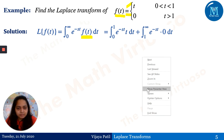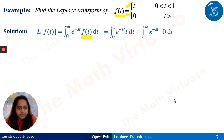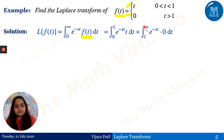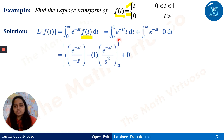The integration is from 0 to 1 of e^(−st) · t dt, because the value of the function from 0 to 1 is t, and from 1 to infinity it is zero. So the integral from 1 to ∞ becomes zero, leaving only ∫₀¹ e^(−st) t dt.